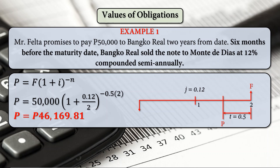Using the compound present value formula P equals F times (1 plus I) raised to negative N: for example 1, F is 50,000 times (1 plus 0.12 divided by 2) raised to negative 0.5 times 2, which is negative 1. The present value is 46,169 pesos and 81 centavos.